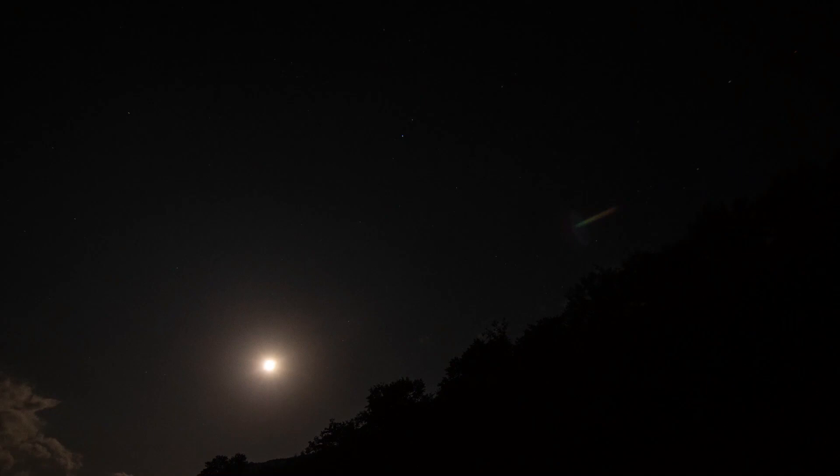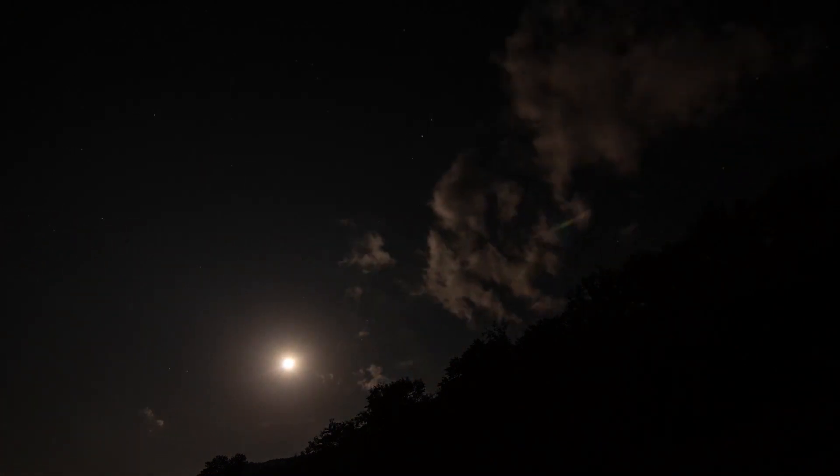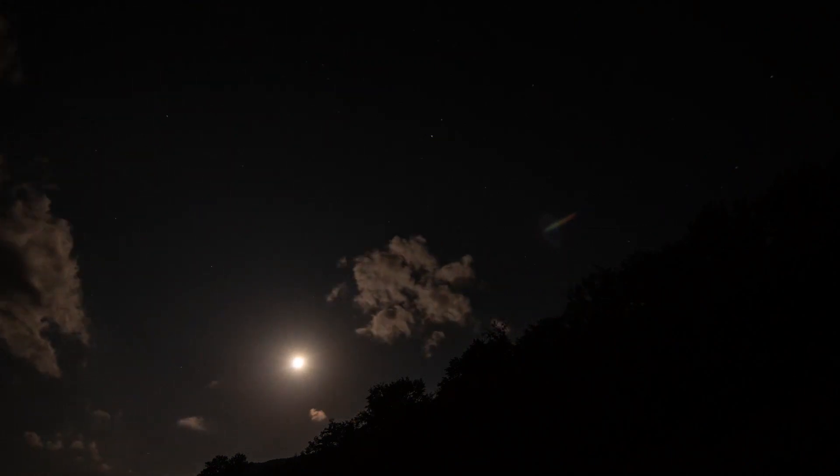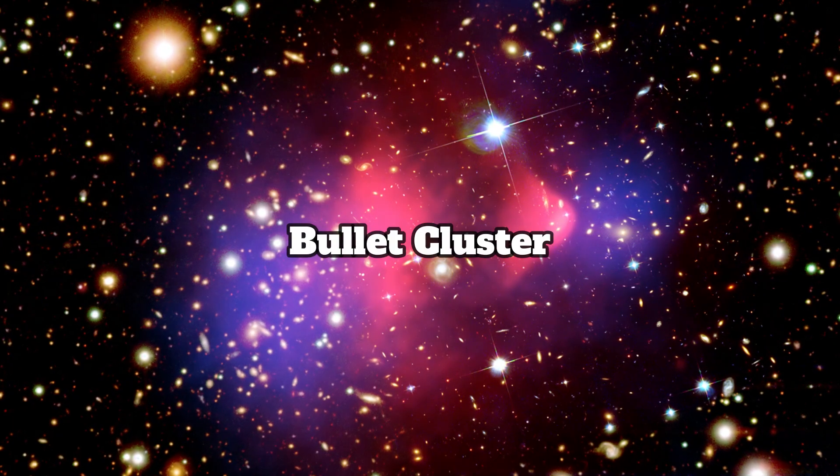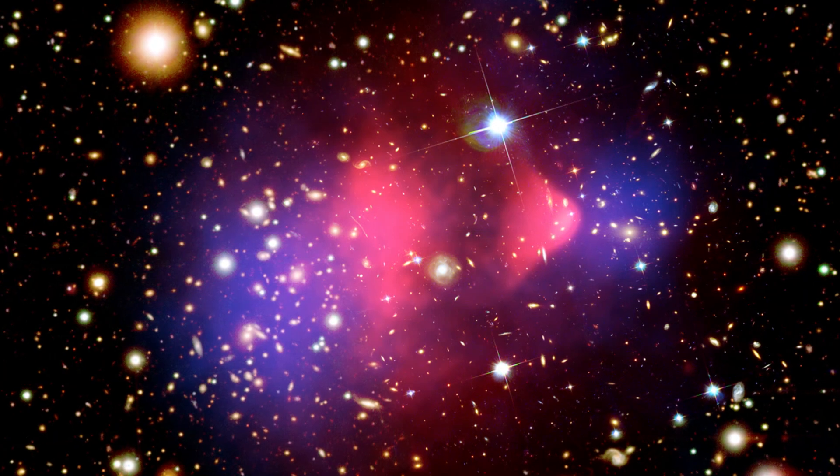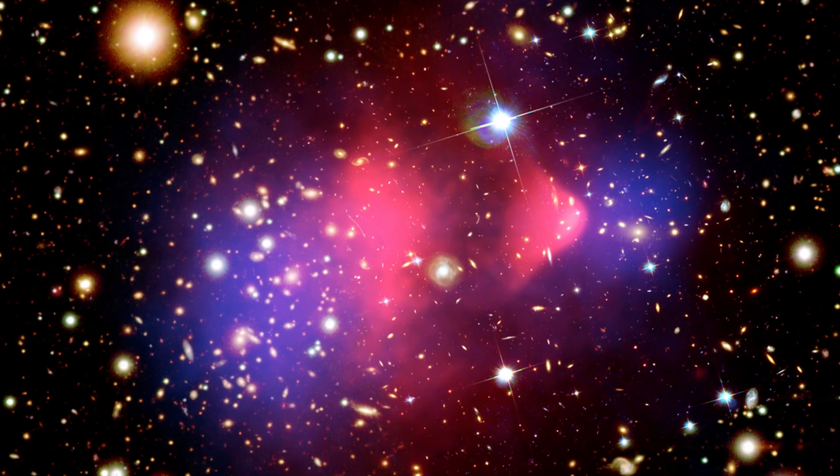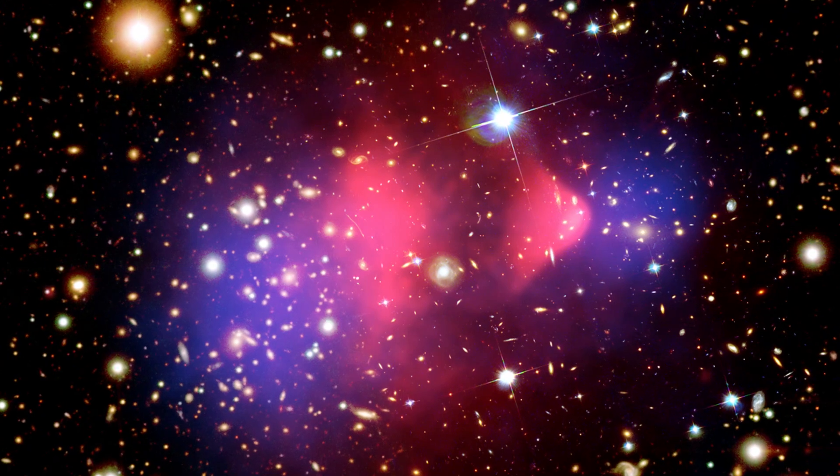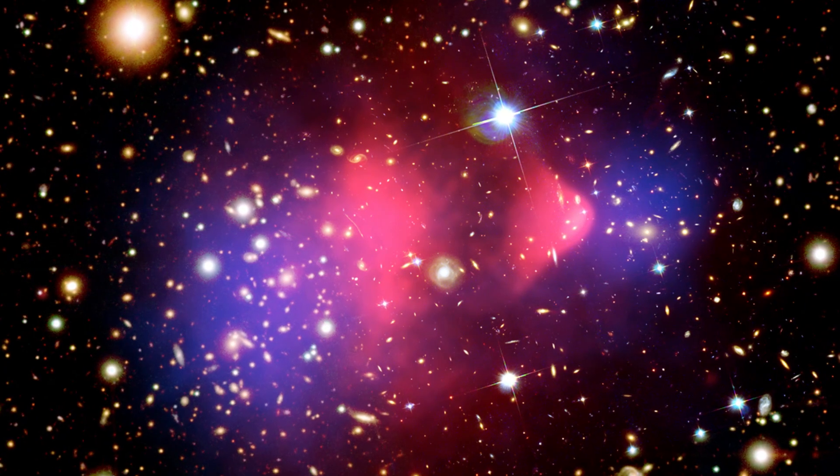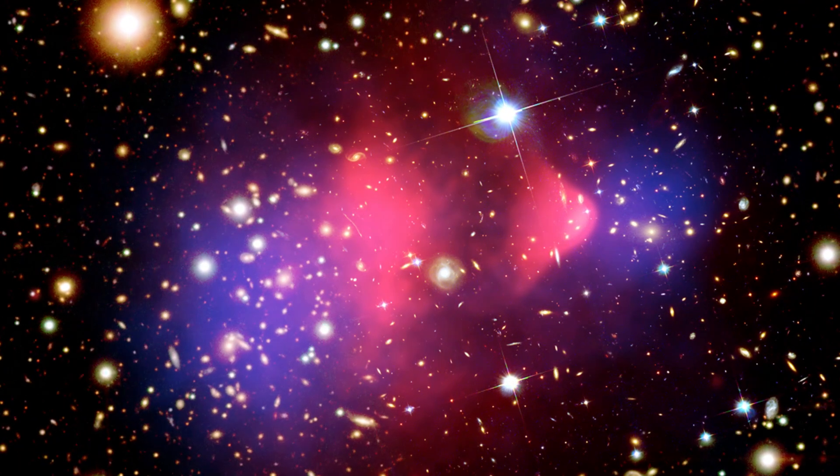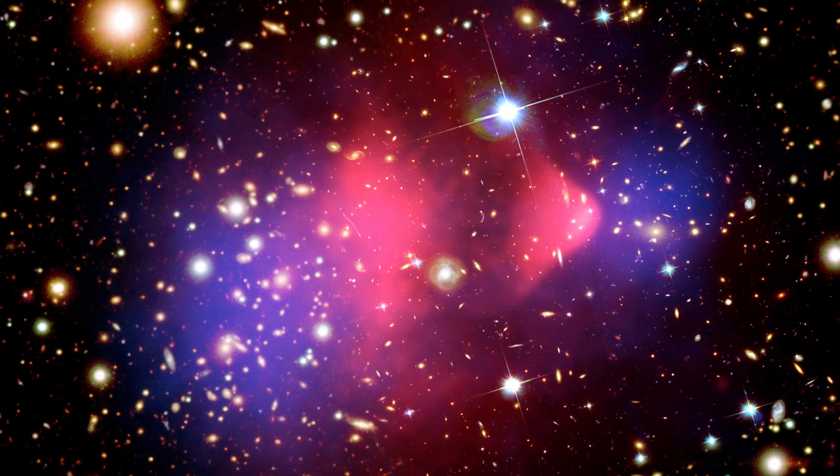One common example of gravitational lensing being utilized as evidence for the existence of dark matter is in a galactic cluster called the bullet cluster, made up of two galactic clusters that collided sometime in the distant past. This specific interaction caused the hot hydrogen gas, which in this image is the pink you see in the middle of the bullet cluster, to create a shock wave similar to that of a bullet.